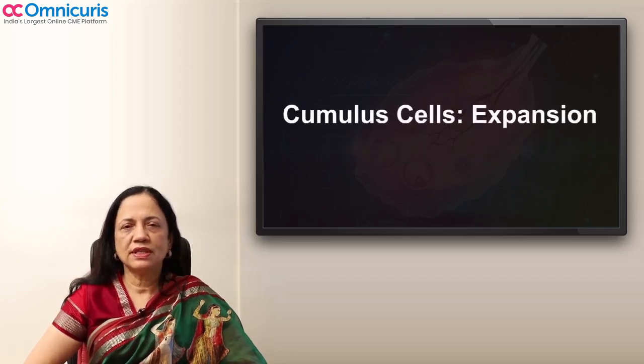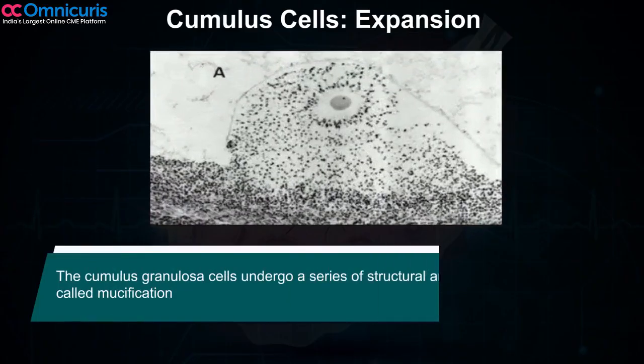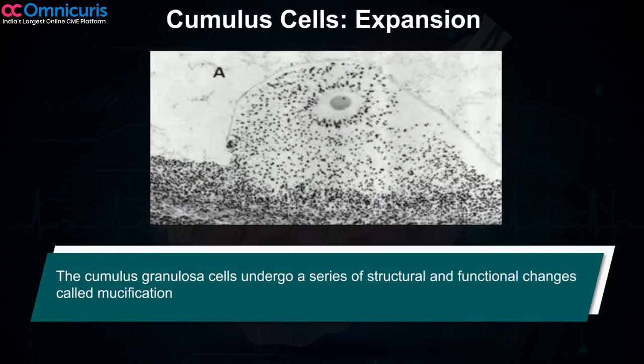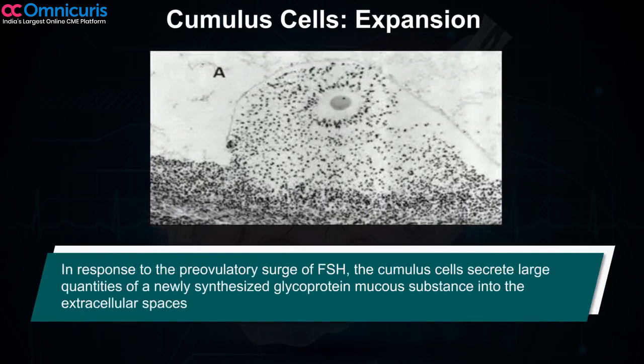What is cumulus cell expansion? The cumulus granulosa cells undergo a series of structural and functional changes called mucification. In response to the pre-ovulatory surge of FSH, the cumulus cells secrete large quantities of a newly synthesized glycoprotein mucus substance into the extracellular spaces.